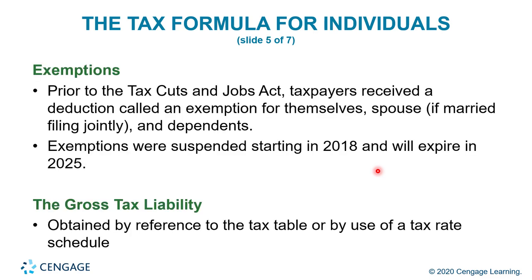Prior to the Tax Cuts and Jobs Act, taxpayers received a deduction called an exemption for themselves, their spouse, and dependents. These exemptions were suspended in 2018 and will expire in 2025. The gross tax liability is often obtained by reference to the tax table or by use of the tax rate schedule.